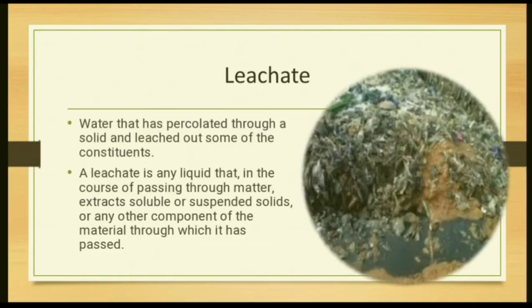Leachate is formed when rainwater percolates into the landfill, passing through the solid waste and leaching out soluble or suspended solids and other components. You may have seen black, dirty water coming out from such sites — that is leachate. It is acidic water with a foul smell produced when water flows through waste material.